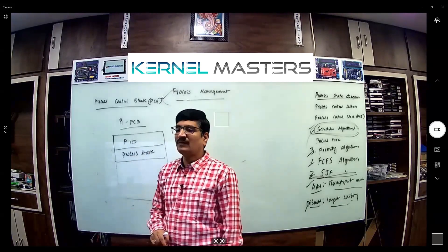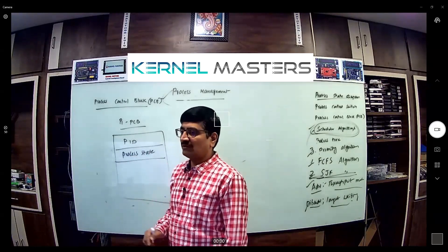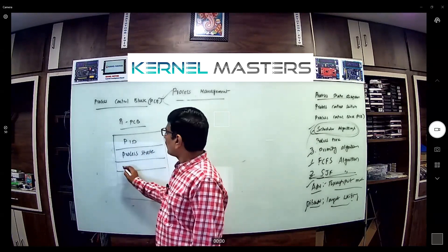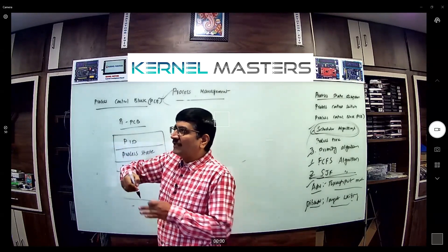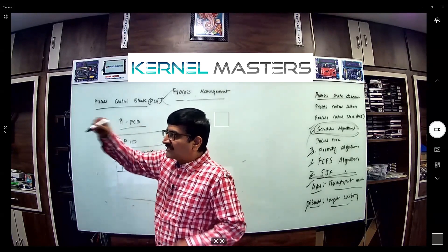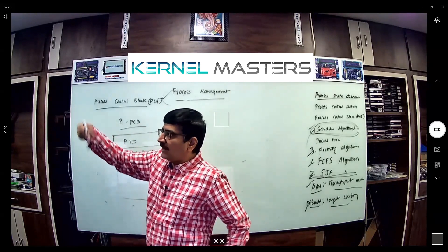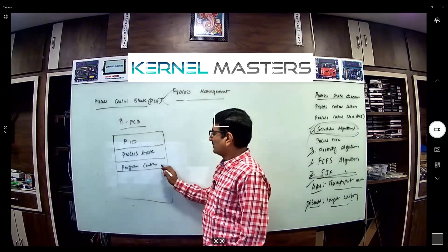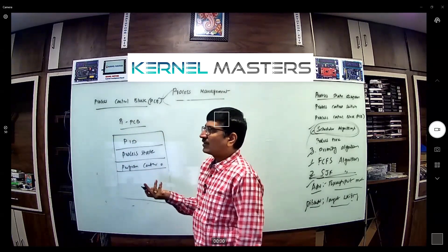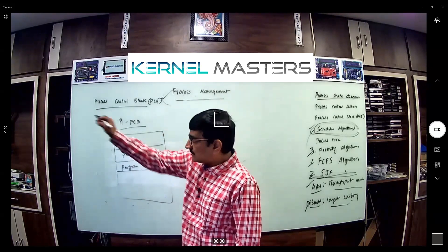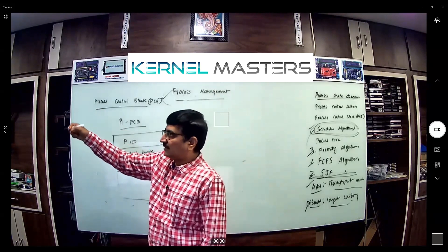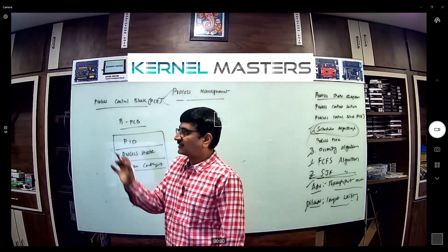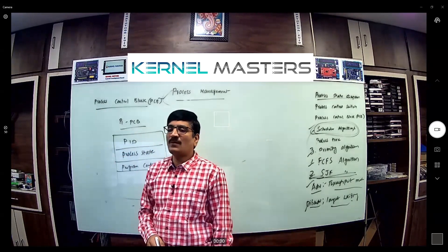The process state keeps on updating. Next is the program counter. The program counter contains which address to point to in the program — which address is currently running. The program counter holds the address of the instruction currently executing — it indicates which instruction is currently running.